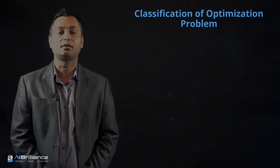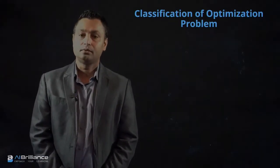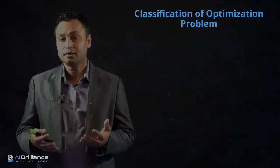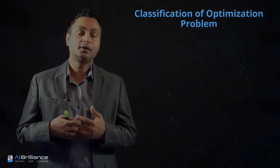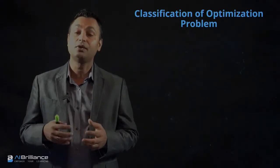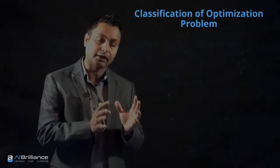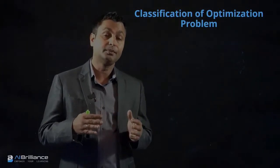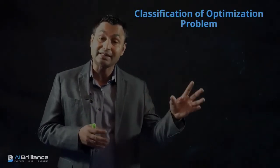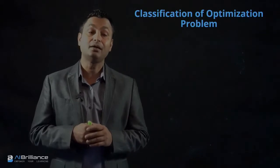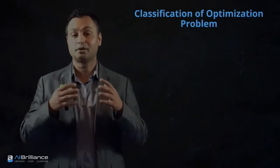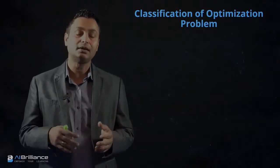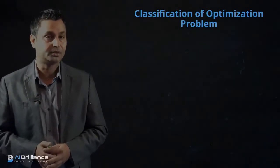When we are talking about classification of optimization problems, it is very important to understand what the different categories of problems are. The optimization literature has created hundreds of different algorithms, many of which are very well suited for a particular type of optimization problem. So if we understand the classification, it will help us in picking the right algorithm for that specific problem. It essentially helps you very quickly pick the right algorithm.